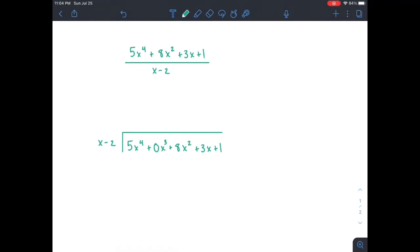So just like we did before, we're going to see how many times does x go into 5x to the 4th? Well, just 5x cubed. And then we're going to multiply each term of x minus 2 by 5x cubed to get 5x to the 4th minus 10x cubed. Then we subtract, and that gives us 10x cubed plus 8x squared when we drop it down.